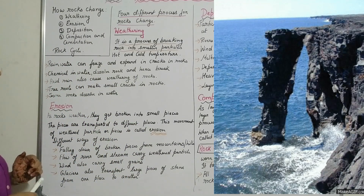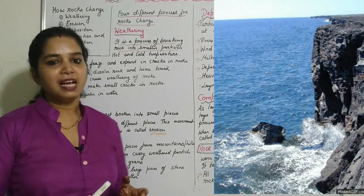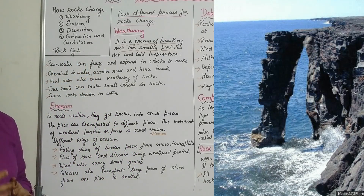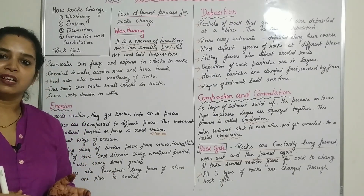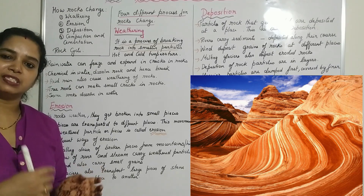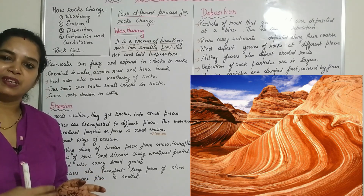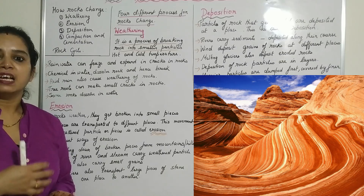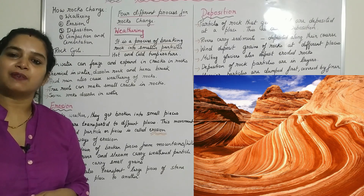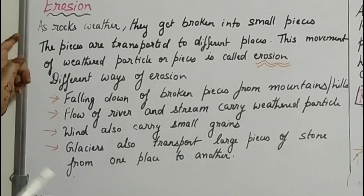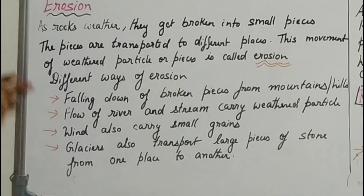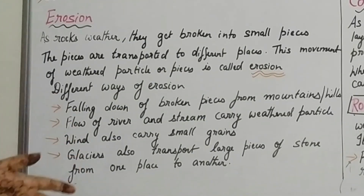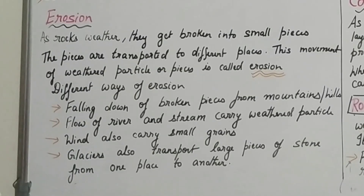The next process is erosion. After weathering breaks rocks into smaller particles, those particles have to be carried away. Smaller particles of rocks are generally carried away by wind, water, or glaciers and deposited somewhere else. As the rock weathers and breaks into smaller particles, they are further broken down in the process of being carried by water currents.